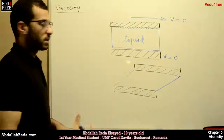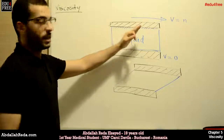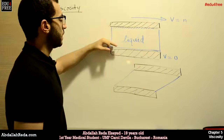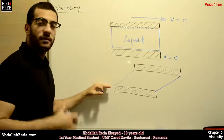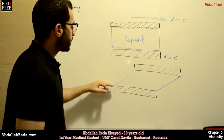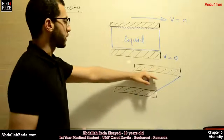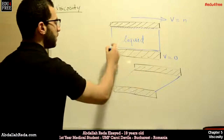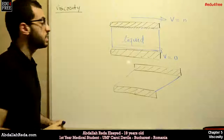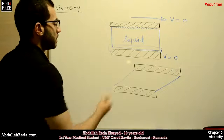This represents viscosity — we have a gradient of movements or velocities, and we have resistance. The liquid is resisting the introduced force at its bottom part. This resistance is viscosity.